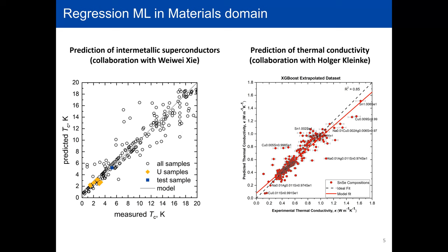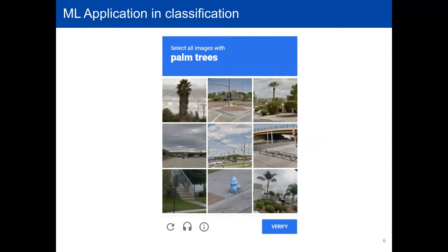Classification problems are very uncommon in material science. Let me start with classification to explain what it means and what the possible pitfalls are. You are doing machine learning classification without even knowing it sometimes. Probably everyone has seen at least once those puzzles you need to solve to pass a verification test — what you're doing there is basically training a machine learning classification model.